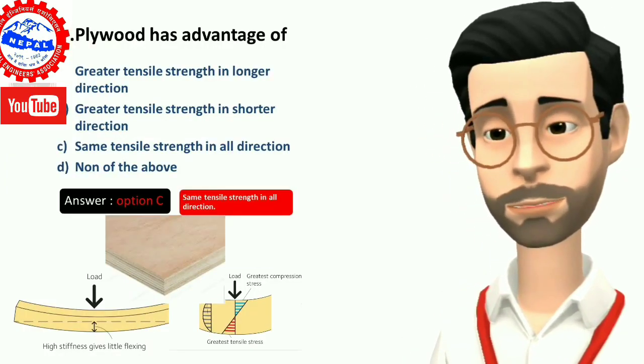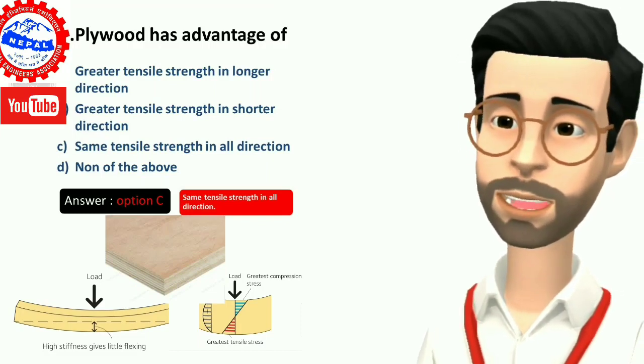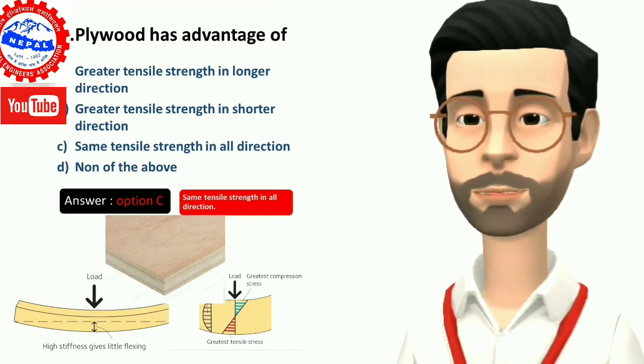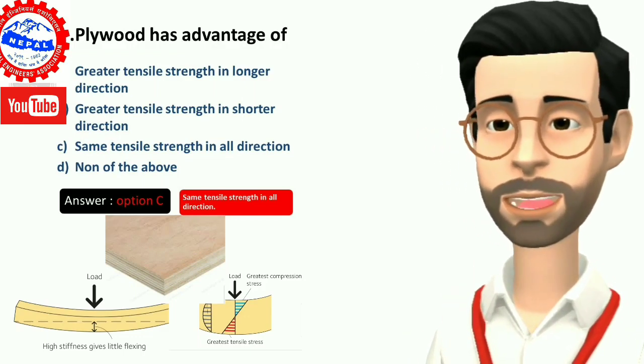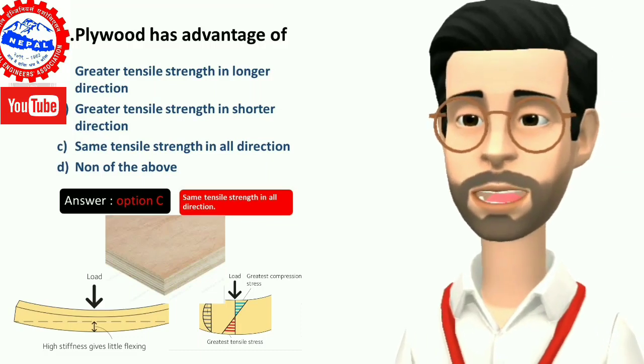Three, plywood has advantage of: A) greater tensile strength in longer direction, B) greater tensile strength in shorter direction, C) same tensile strength in all direction, D) none of the above. Answer is option C, same tensile strength in all direction.